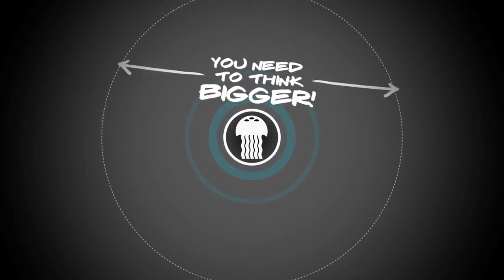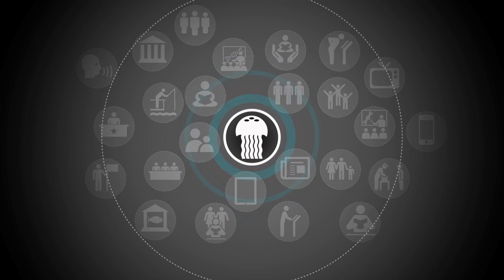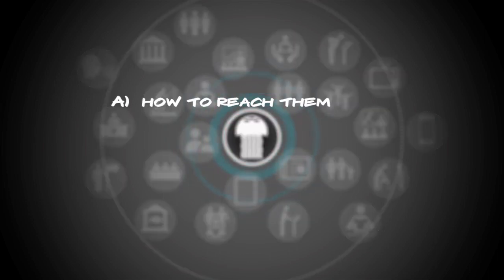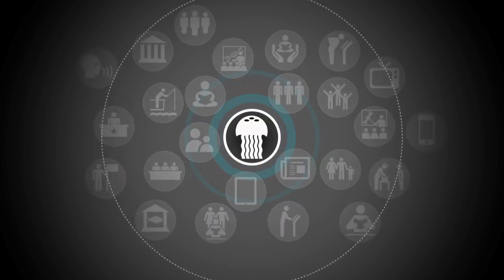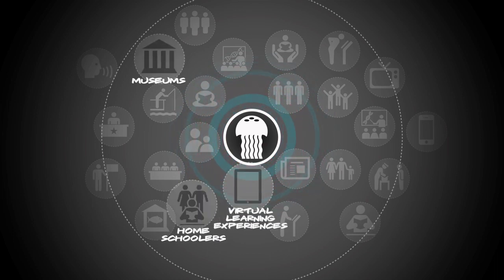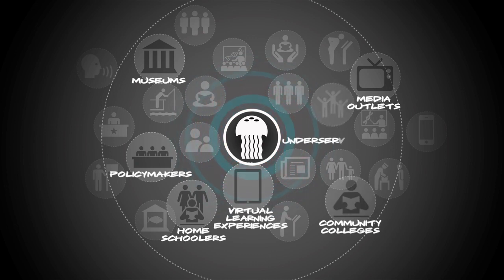You need to think bigger than single websites and grad students. The good thing is that there are lots of possibilities. Once you have a feel for who's out there, you can figure out how to reach them and who you can work with to help you reach them. There are many options: museums, virtual learning experiences, homeschoolers, policymakers, media outlets, community colleges, and underrepresented or underserved after-school programs, just to name a few.